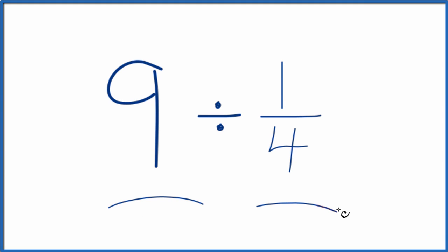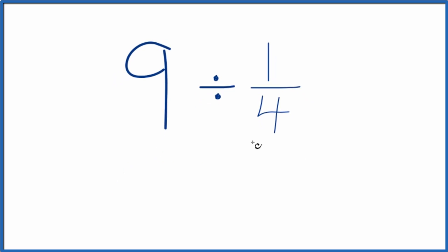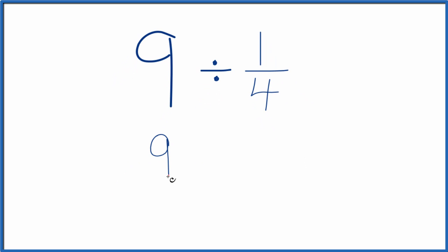Let's divide 9 by 1 fourth. And here's how we can do that. First off, let's call this 9 over 1. It's still 9. We're just dividing by 1. But it's helpful to have a fraction here.